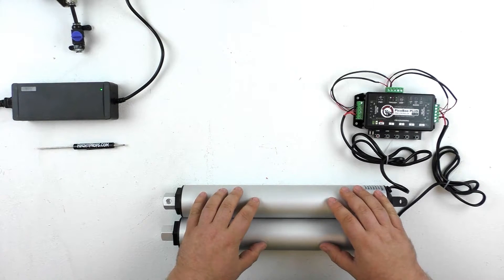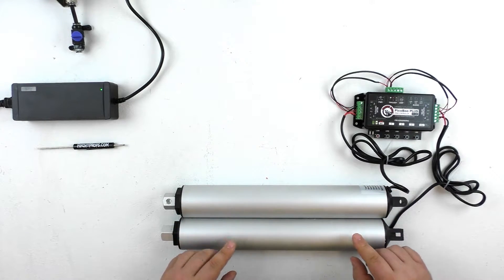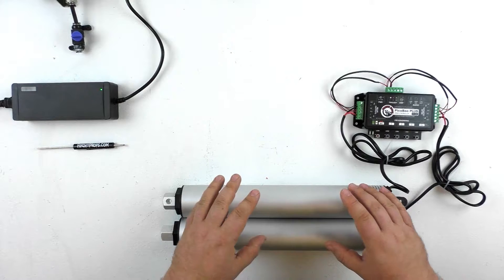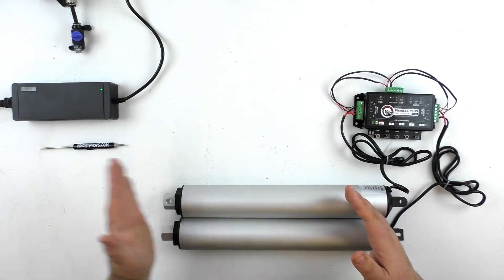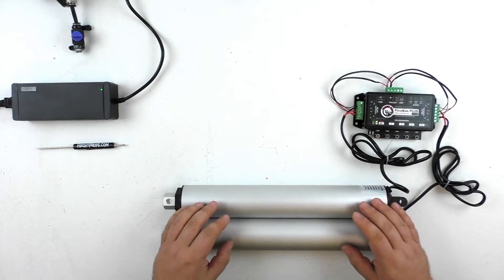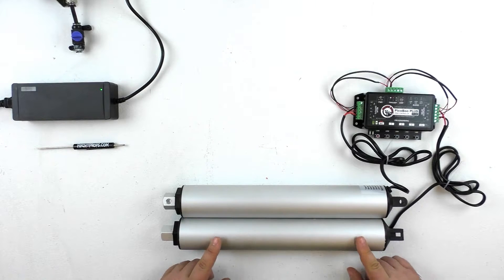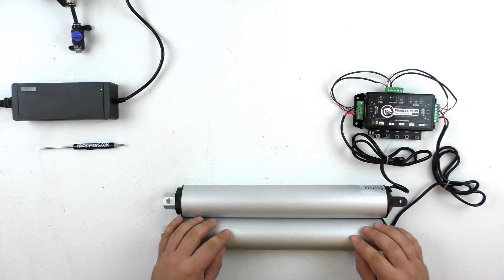It's important to remember also that if you're using linear actuators, they do require a duty cycle. That means that they need to be allowed to rest. They can't run continually in and out forever. For specifics on the duty cycles for the different types of linear actuators, you can see the product pages on the website.